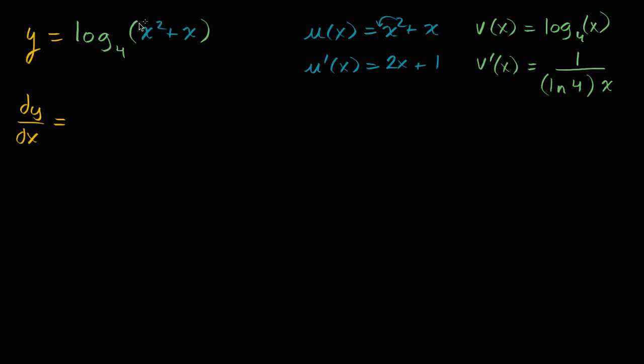But we can now use this information because y, this y can be viewed as v of u of x. Remember v is the log base four of something, but it's not v of x, we don't have just an x here, we have the whole expression that defines u of x. We have u of x right there. And let me draw a little line here so that we don't get those two sides confused.